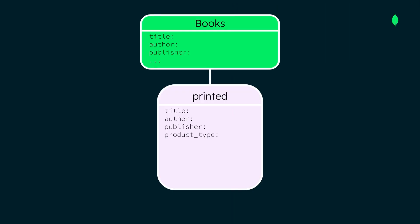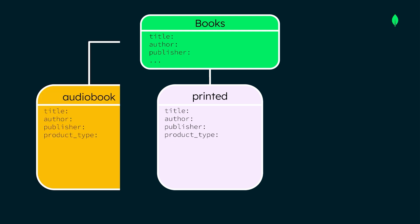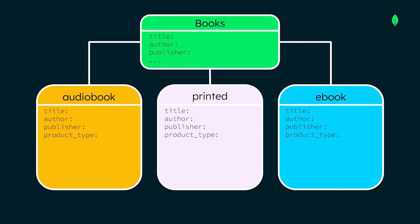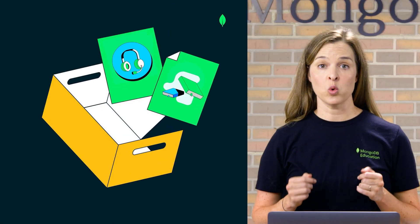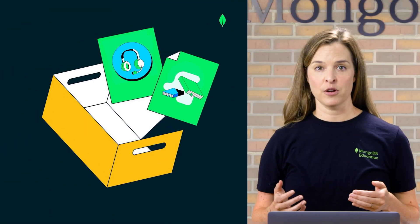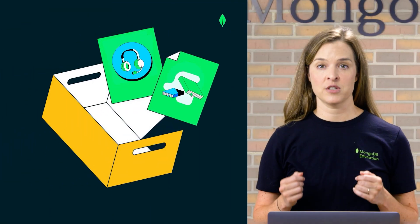Let's take a look at an example from our bookstore app. As you may recall, we have separate entities for printed books, audiobooks, and ebooks, which have many shared attributes. Each entity also has attributes specific to the media type. When deciding how to store these documents, remember the golden rule: data that is accessed together should be stored together.